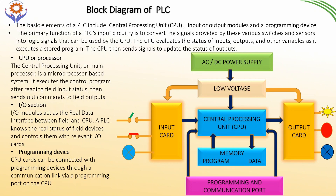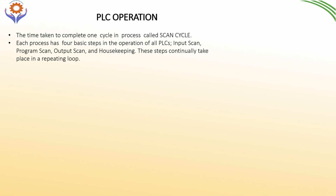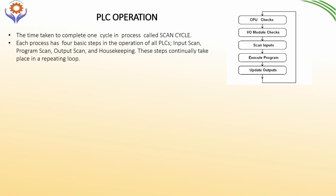So the PLC is otherwise called an industrial computer. PLC operation — what is the scan cycle? The time taken to complete one cycle in a process is called the scan cycle. Each process has four basic steps in the operation for all PLCs: input scan, program scan, output scan, and housekeeping. These steps continuously take place in repeating loops.